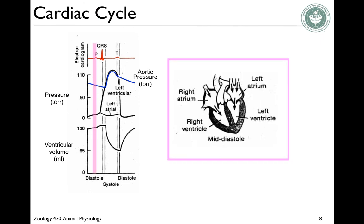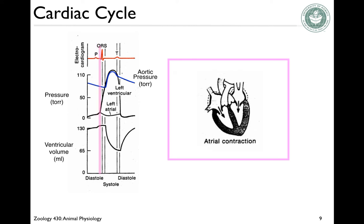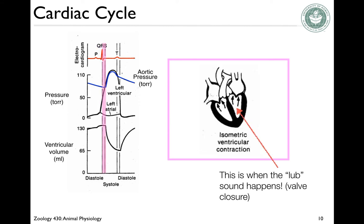The P wave is the atrial signal, and it just precedes atrial contraction. During atrial contraction, the valves between the atria and the ventricles are open and we have ventricular filling. Then we have the QRS complex, which signals isometric ventricular contraction. This is when the ventricle contracts, closes those valves, and that's when you hear the 'lub' sound.